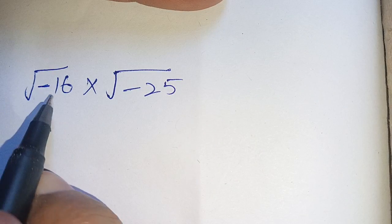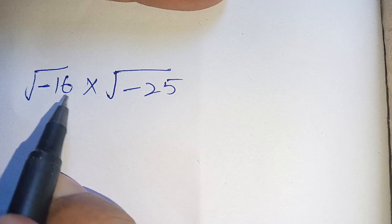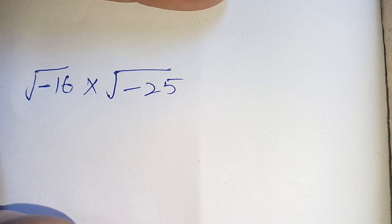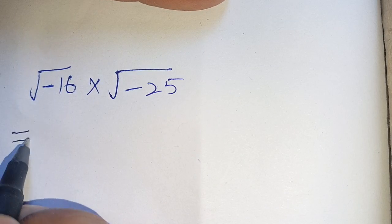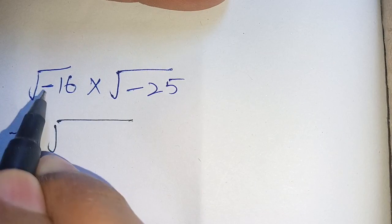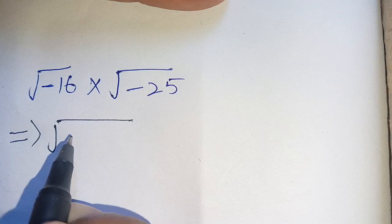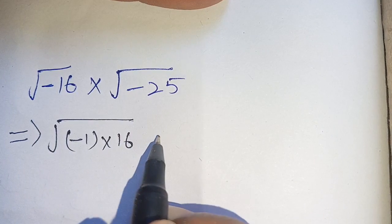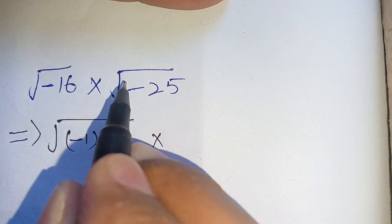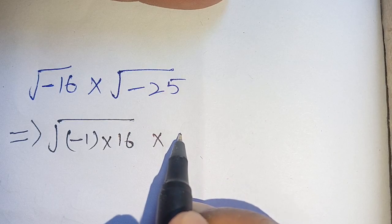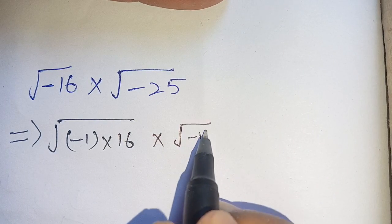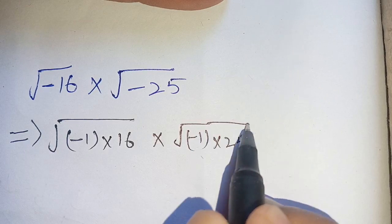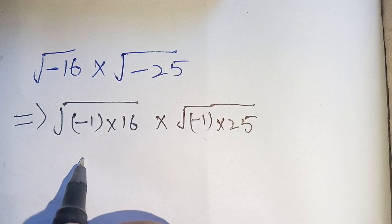How to solve this problem: square root of minus 16 times square root of minus 25. We can write square root of minus 16 as square root of minus one times 16, and square root of minus 25 as square root of minus one times 25.